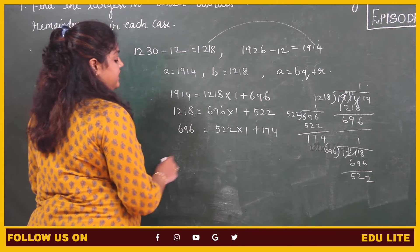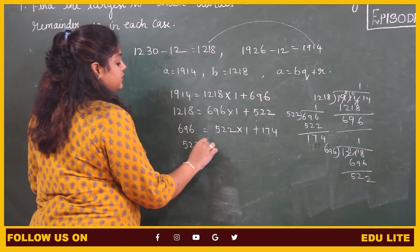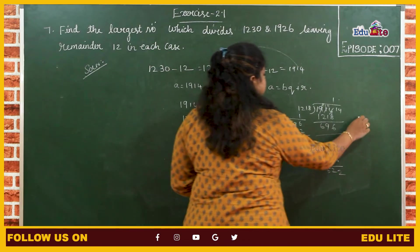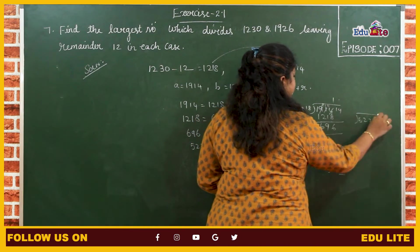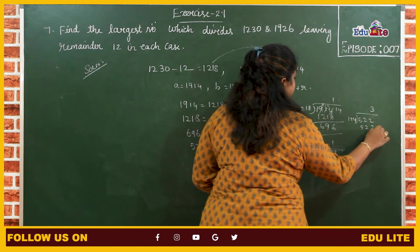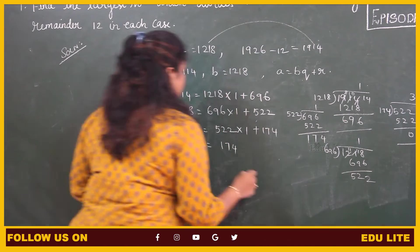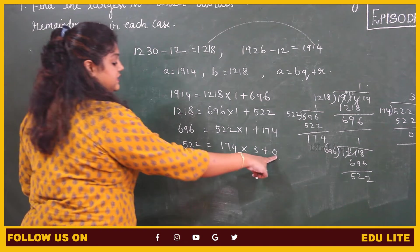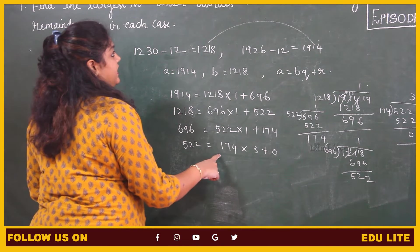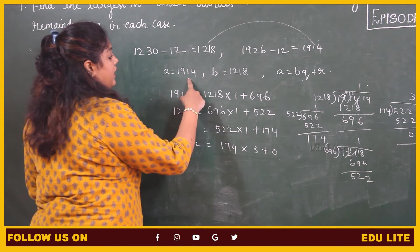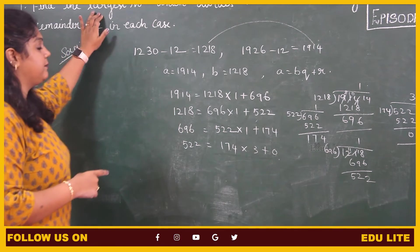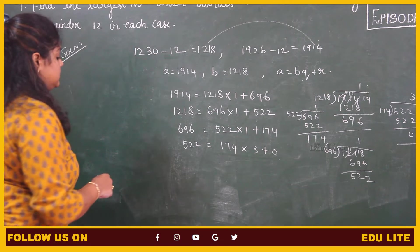Again the remainder is not 0, we have to proceed. The dividend is 522 and the divisor is 174. 522 divided by 174: let us choose 3 — it will give us 522. So 174 into 3 plus 0. The remainder is 0, therefore in the same step the divisor will be the HCF of the two numbers 1914 and 1218, which will also be the largest number that divides 1230 and 1926.